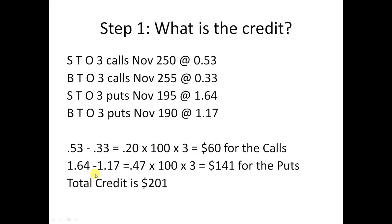For the puts, we have 164 cents minus 117 cents, which gives us 47 cents credit. Multiply by 100 for shares, then by 3 for three spreads: 0.47 × 100 × 3 equals $141 for the puts. Adding both together — $60 plus $141 — we have a grand total credit of $201 on this trade.